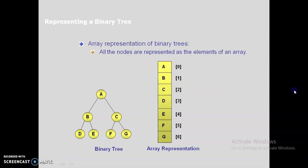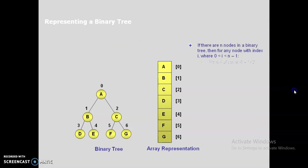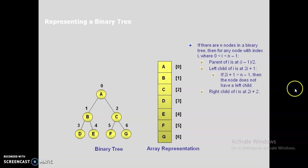So how will you represent this tree in linked list format? Before that, let us discuss how to find the parent. Suppose there are n nodes in a binary tree, and any node with index i is in between 0 and n minus 1. Then the parent of i is at index (i minus 1) divided by 2. For example, for index 0 it is the root node, and for index 1: (1 minus 1) divided by 2 equals 0, so its parent is at position 0.